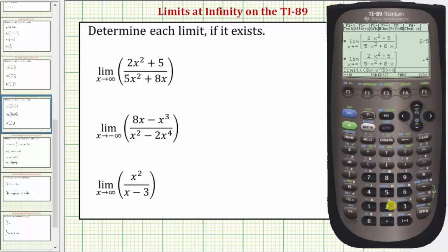divided by open parenthesis x squared, so x raised to the power of 2 minus 2x raised to the power of 4, close parenthesis, comma, the variable is x, comma, x is approaching negative infinity,